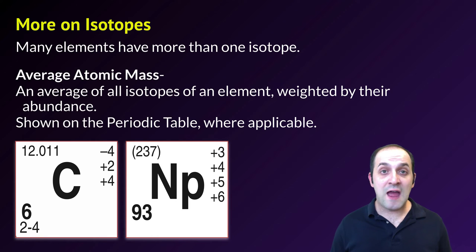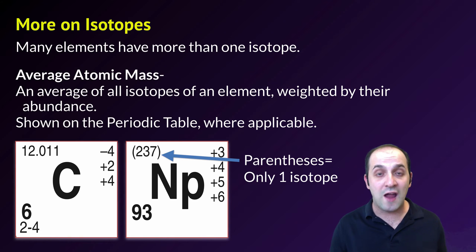Interestingly, not all of the elements have multiple isotopes, so there are a number of elements, particularly at the bottom of the periodic table, that only have one isotope because they've only been created for short fractions of a second in the laboratory by people who are interested in investigating the process of making heavier elements. In those cases, the isotope's mass is always going to be written in parentheses to indicate that there's only one isotope of the element that's ever been produced, like in neptunium that we see here.